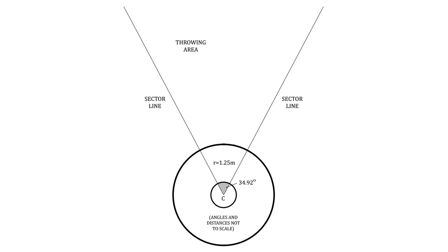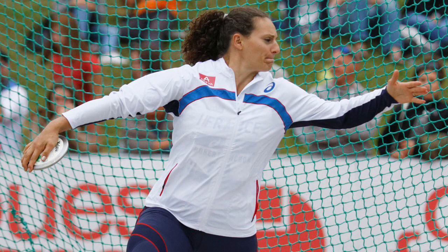To be a valid throw, the discus must land within a marked 34.92 degree sector. The reason for this seemingly strange choice of angle is that it's easy to measure out in terms of a triangle with sides that are in a simple ratio, the ends of the sector lines being connected by a third line that's exactly 60% as long. For much of the sport's history, athletes perfected the most successful methods of throwing exclusively through a process of trial and error, newcomers learning the art by copying the techniques of leading exponents.